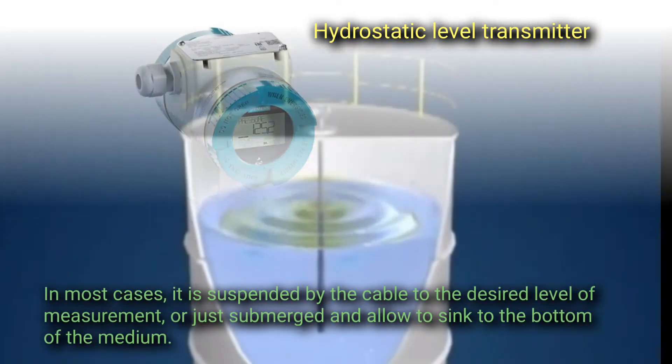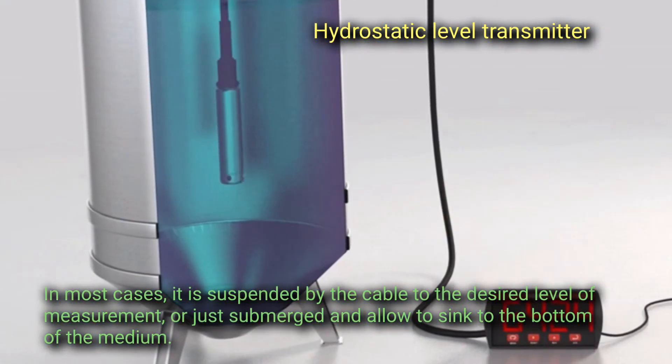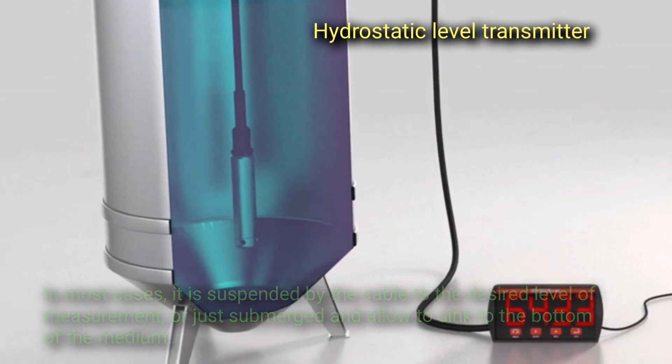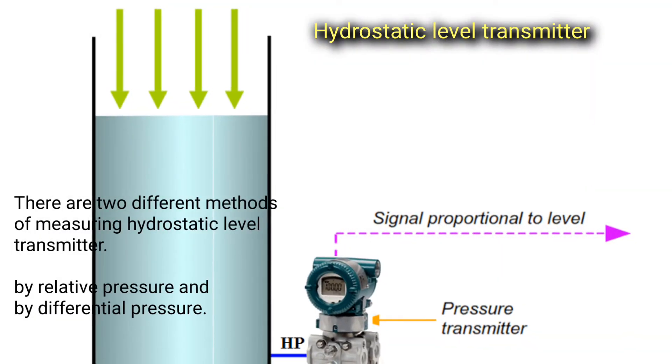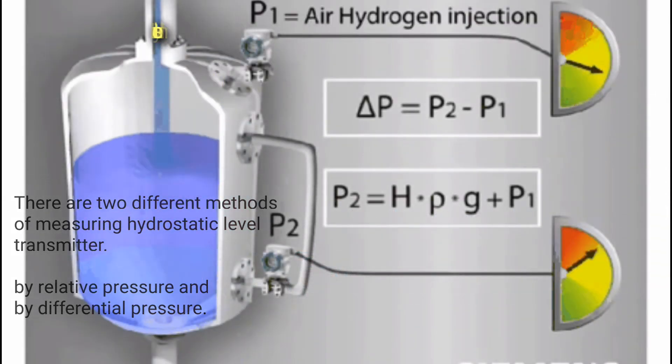In most cases, it is suspended by the cable to the desired level of measurements, or just submerged and allowed to sink to the bottom of the medium. There are two different methods of measuring hydrostatic level: by relative pressure and by differential pressure.